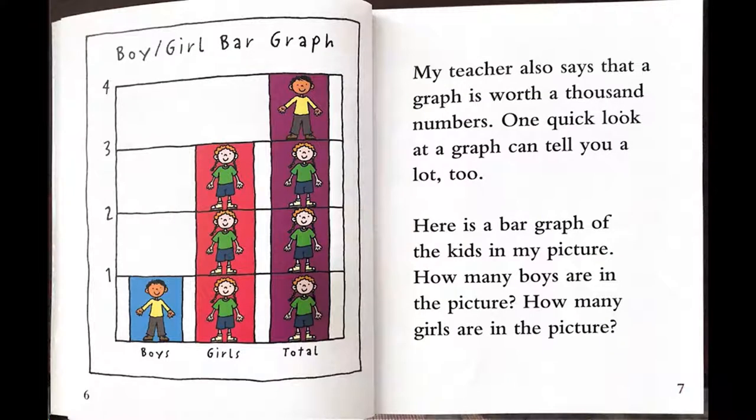My teacher also says that a graph is worth a thousand numbers. One quick look at a graph can tell you a lot too. Here is a bar graph of the kids in my picture. How many boys are in the picture? How many girls are in the picture? There are one boy and three girls in the bar graph.